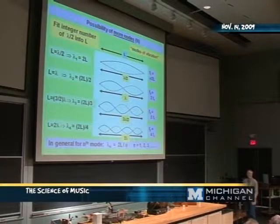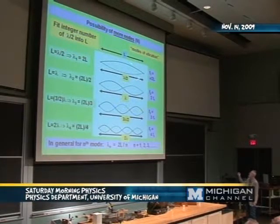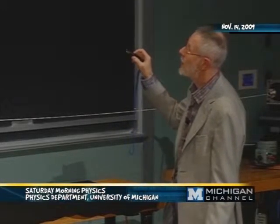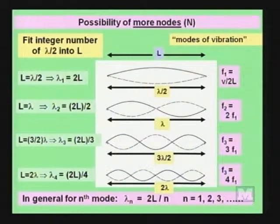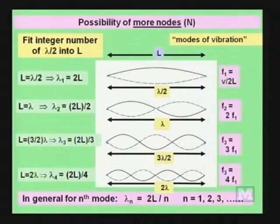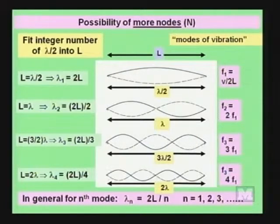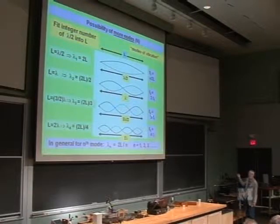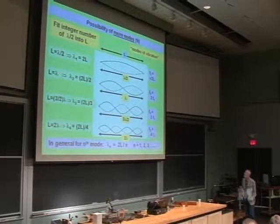You can make the same concept work with more nodes. I can fit a node in here and have a full wavelength fitting into the string length, or one and a half wavelengths, or two wavelengths. There's a whole hierarchy of such standing waves. The first has wavelength 2L, the second has wavelength L, the third is 2L over 3, the fourth is 2L over 4. The frequencies vary correspondingly — they increase by integers 1, 2, 3, 4, and so on.